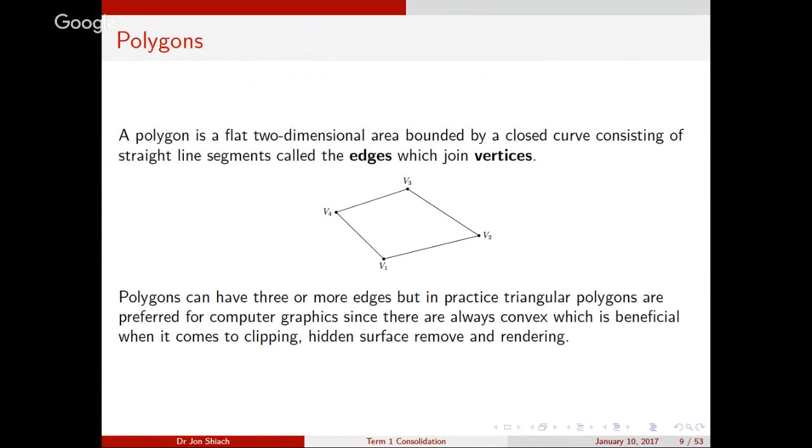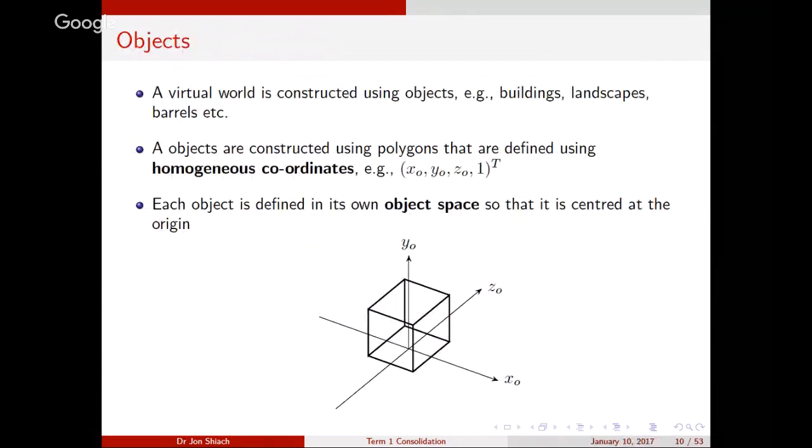Triangles make things a lot simpler when we're dealing with lighting, clipping, as we'll see later on today and next week, and hidden surface removal. Usually in practical applications, we always use triangles. In this unit, we could use quadrilateral polygons, or five-sided polygons, or six-sided. So we're not going to constrain ourselves to just triangles. The reason why triangles are also preferred is because they're always convex. A polygon is convex when between any two points within the polygon, if I draw a line between those two points, it doesn't cross an edge.